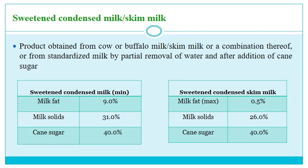For sweetened condensed milk and sweetened condensed skim milk as per FSSAI, the product is obtained from cow or buffalo milk or skim milk or a combination thereof, by partial removal of water and addition of cane sugar. Requirements for sweetened condensed milk: fat minimum 9%, milk solids 31%, cane sugar 40%. For sweetened condensed skim milk: milk fat maximum 0.5%, milk solids 26%, cane sugar 40%.